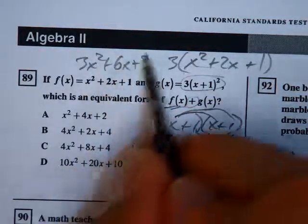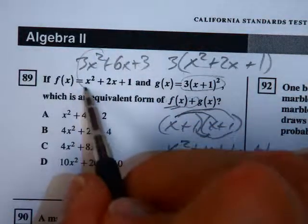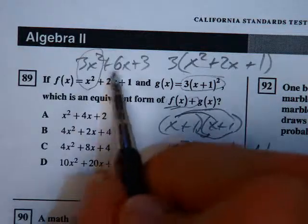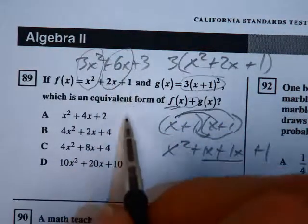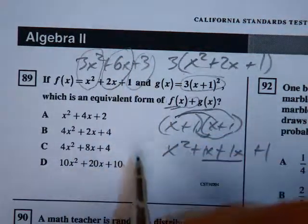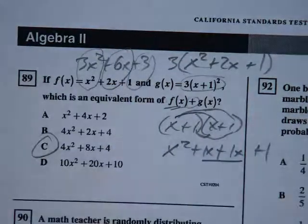Now if you look, we've got kind of common terms here, like terms. There's 4x squared there. I got an 8x and I got a 4. The only one that has that 8x in the middle is answer C.